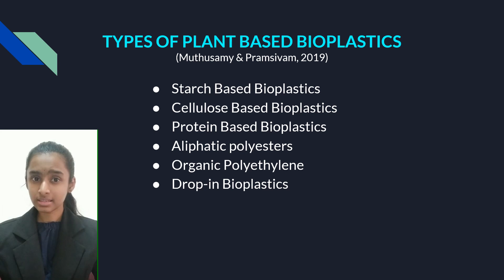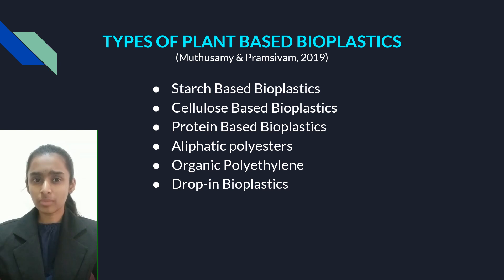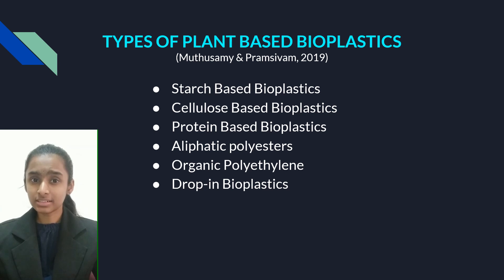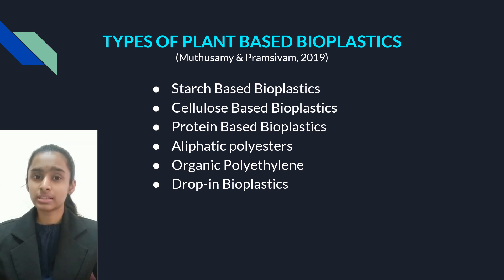Starch-based bioplastics are simple bioplastics derived from cornstarch, which are often mixed with biodegradable polyesters. Cellulose-based bioplastics are produced using cellulose esters and cellulose derivatives. Protein-based bioplastics are produced using protein sources such as wheat gluten, casein, and milk. Aliphatic polyesters are a collection of biobased polyesters including PHB, which is poly-3-hydroxybutyrate, and PHA, poly-hydroxyalkanoate.